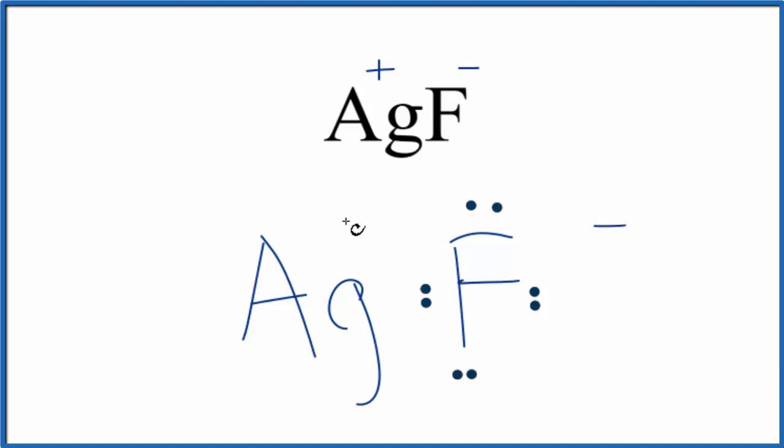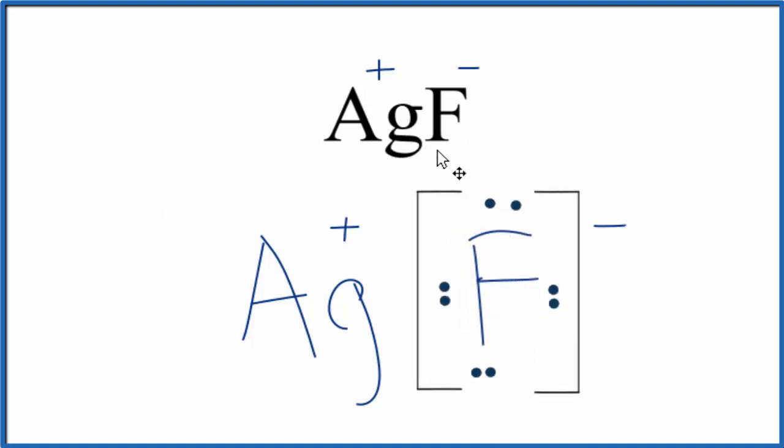Silver lost an electron. It'll be 1+. We should put brackets around the fluorine to show that it gained the electron. It's not sharing it with silver. So this is the Lewis structure for AgF, silver fluoride.